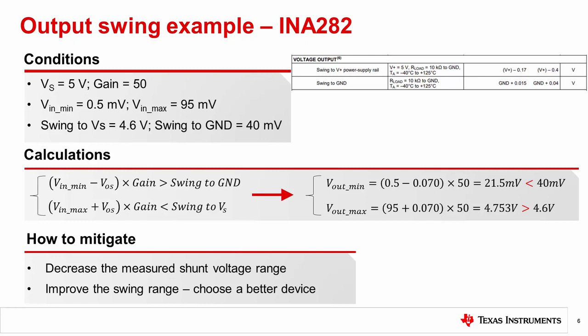From the datasheet, we calculate the swing range to be 40 millivolts to 4.6 volts. Using the min and max output equations from the previous slide, we get the required lowest output voltage level is below the swing to ground spec, and the required highest output voltage level is above the swing to VS spec.